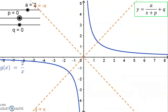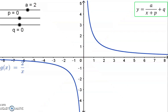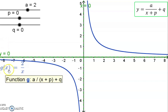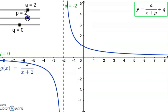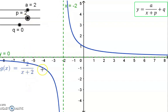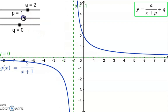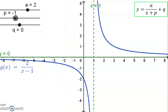A hyperbola also has two asymptotes: on the y-axis at x equals zero, and on the x-axis at y equals zero. We already know that the horizontal asymptote moves up and down with the q value. If we add a p value, the horizontal asymptote stays constant, but the vertical asymptote moves — in this case two units to the left because the p value was positive. If we make the p value negative, both the graph and the vertical asymptote will move in the positive direction.